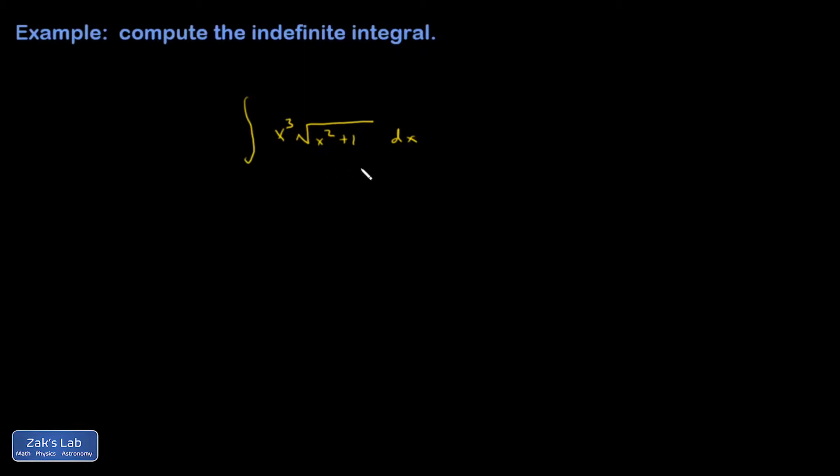And this is a classic case where u-substitution is just mandatory. You need to do it formally instead of just trying to see the chain rule backwards. The trick is always to let u equal the interior of the square root, and that cleans up this problematic square root.